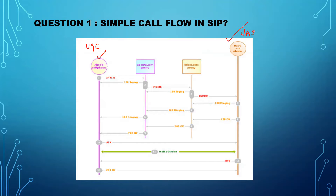After the 100 Trying, it will get a 180 Ringing and then a 200 OK — that's the simple flow from Bob's side. Once the UAC receives the 200 OK, it will send an ACK: 'I received this.' So the UAC sends an acknowledgement to Bob's IP phone. After that, the media session is established. If Alice's soft phone disconnects, there will be a BYE from the UAC; if Bob disconnects, there will be a BYE from Bob's IP phone, followed by a 200 OK reply.